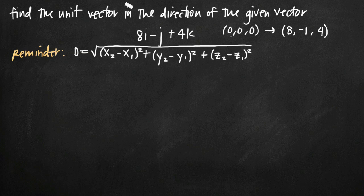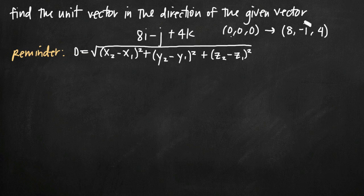A unit vector is a vector with length 1, or magnitude 1. So if we want to find a unit vector in the same direction as this vector, we need it pointing toward (8, -1, 4) but only 1 unit long. The way we're going to find an expression for the unit vector is first by using the distance formula in three variables to calculate the distance between the origin and this terminal point.